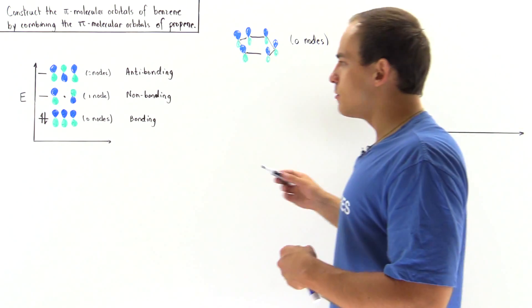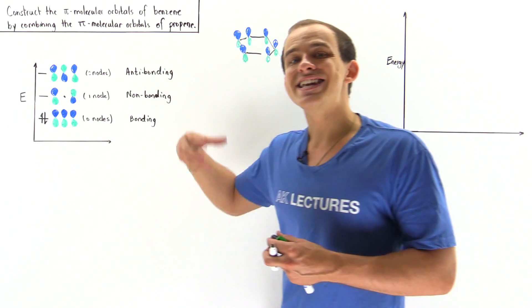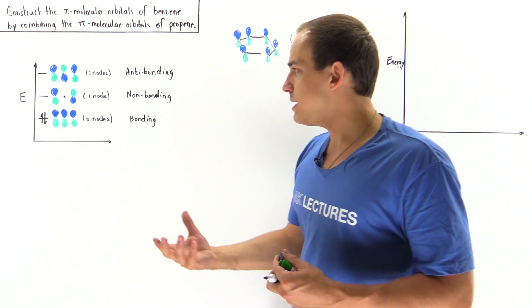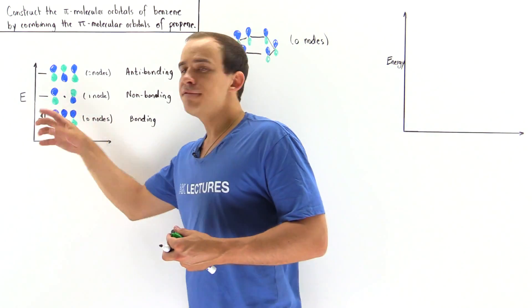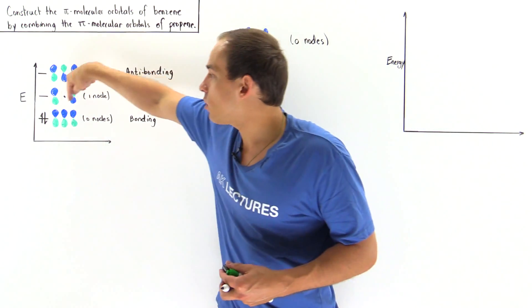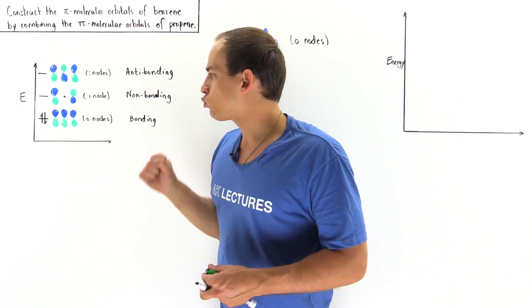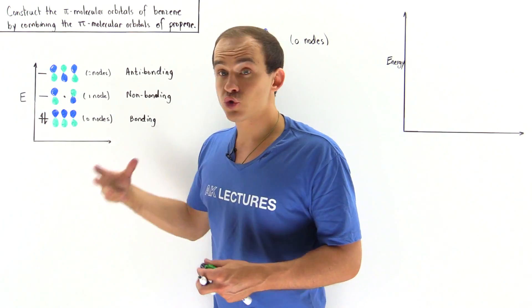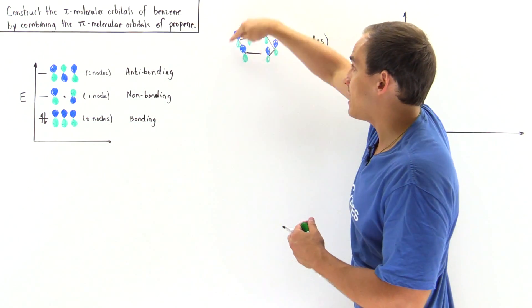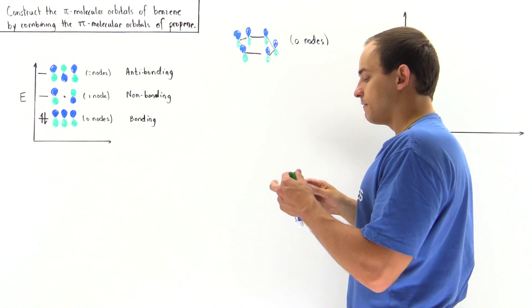Now let's move on to combining this with a negative of itself. Negative simply means we flip our wave function — the orbital region that is blue becomes green and the orbital region that is green becomes blue. So this side remains the same but the other side is flipped.